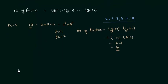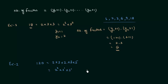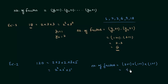Now let's move to the next example. The number is 120. We have to find the number of factors of 120 by factorizing it into prime factors: 2 multiplied by 2 multiplied by 2 multiplied by 3 multiplied by 5, or 2 raised to power 3, 3 raised to power 1, and 5 raised to power 1. The number of factors equals (3 plus 1) multiplied by (1 plus 1) multiplied by (1 plus 1), which gives 4 multiplied by 2 multiplied by 2, equal to 16. So there are 16 factors of 120.